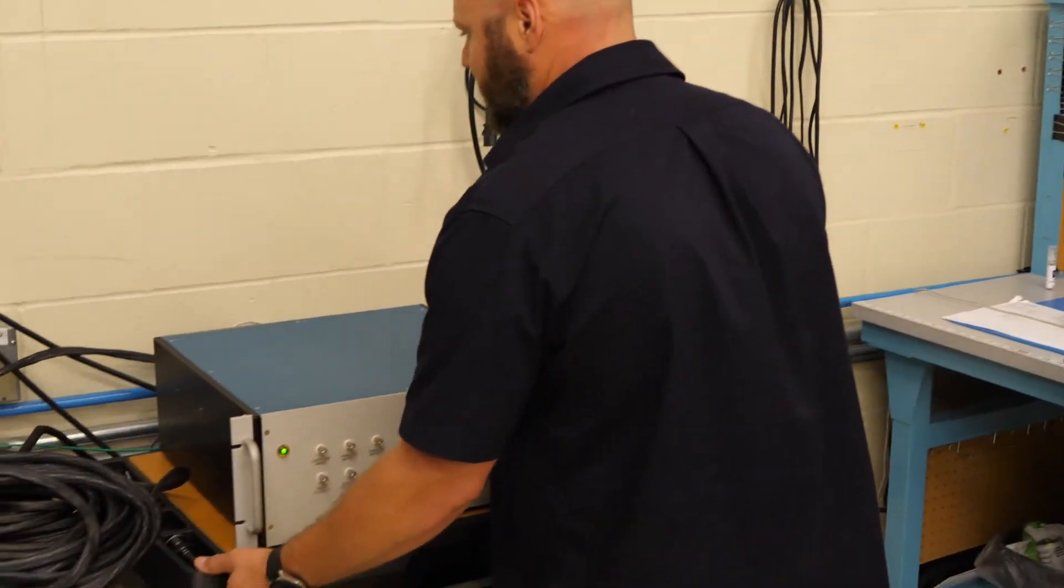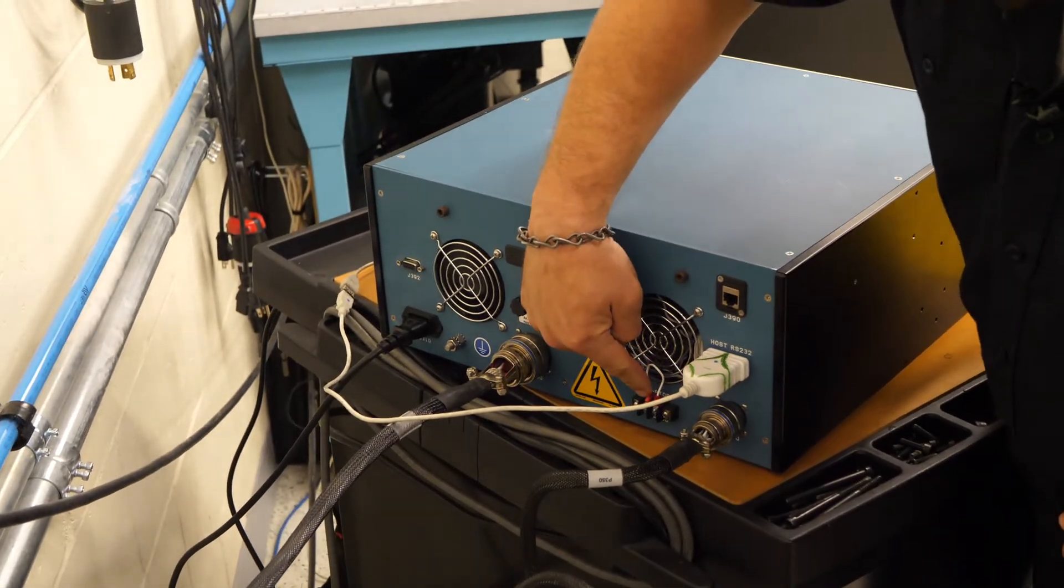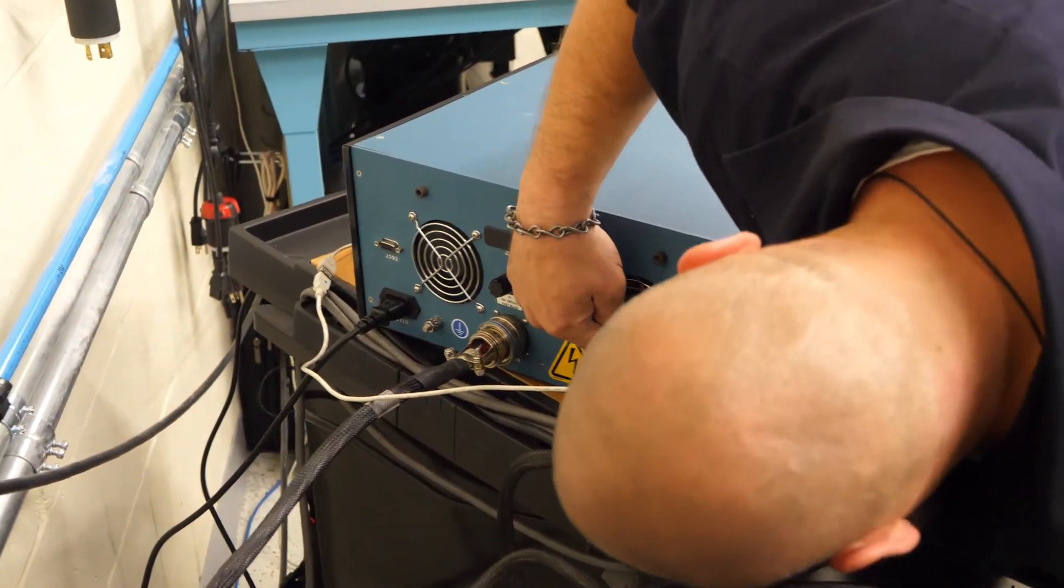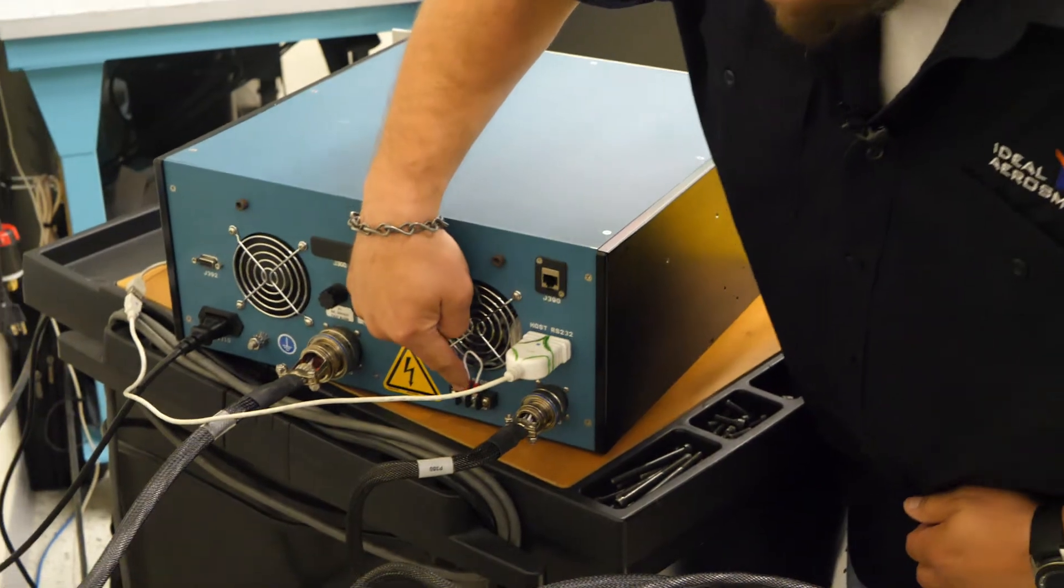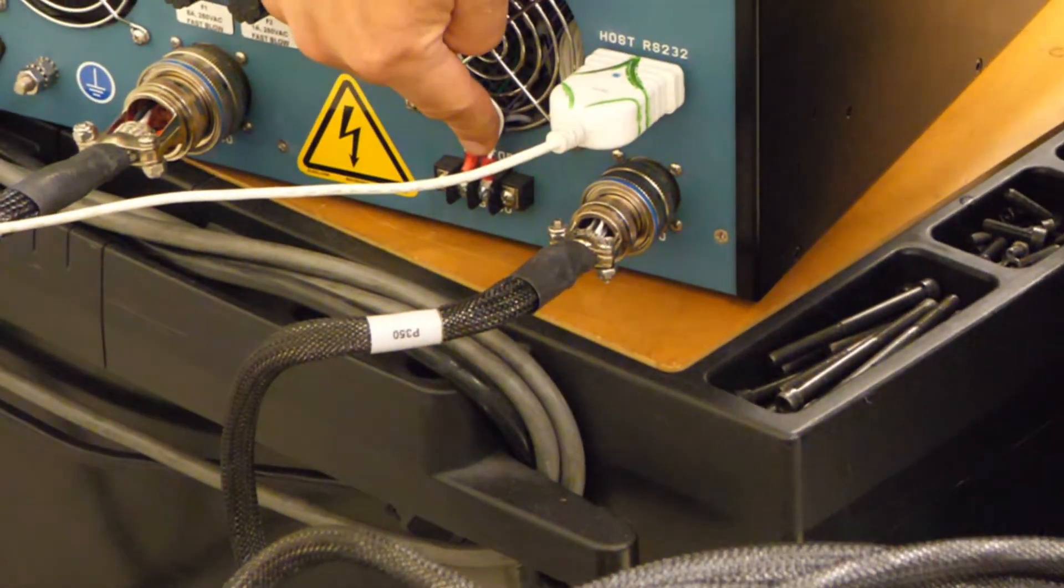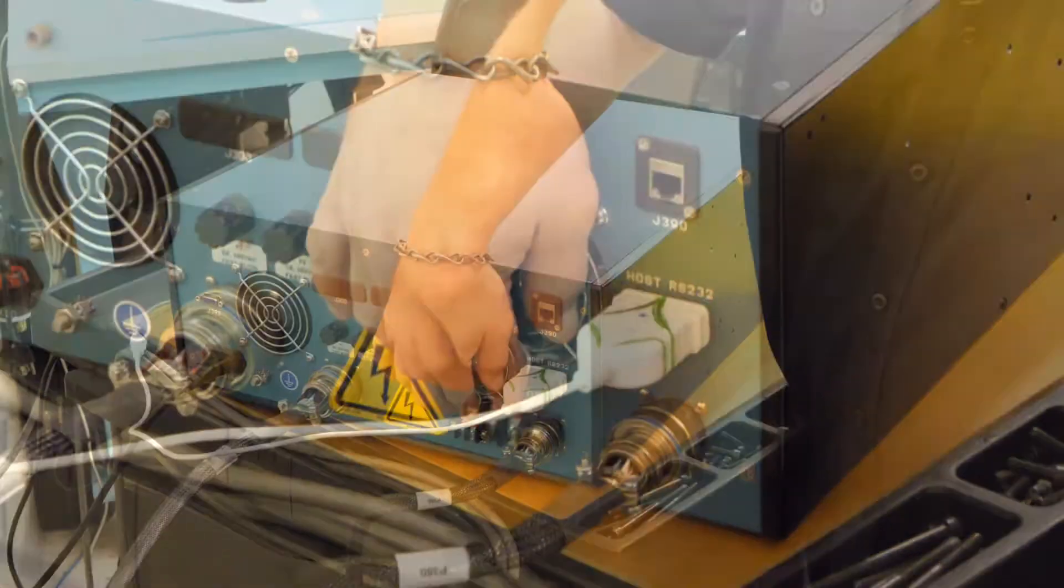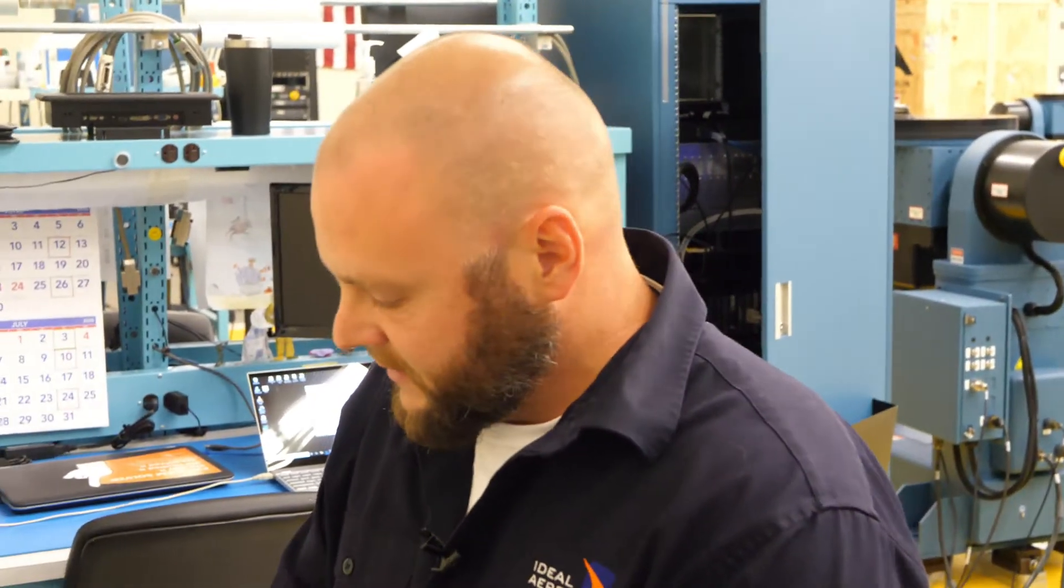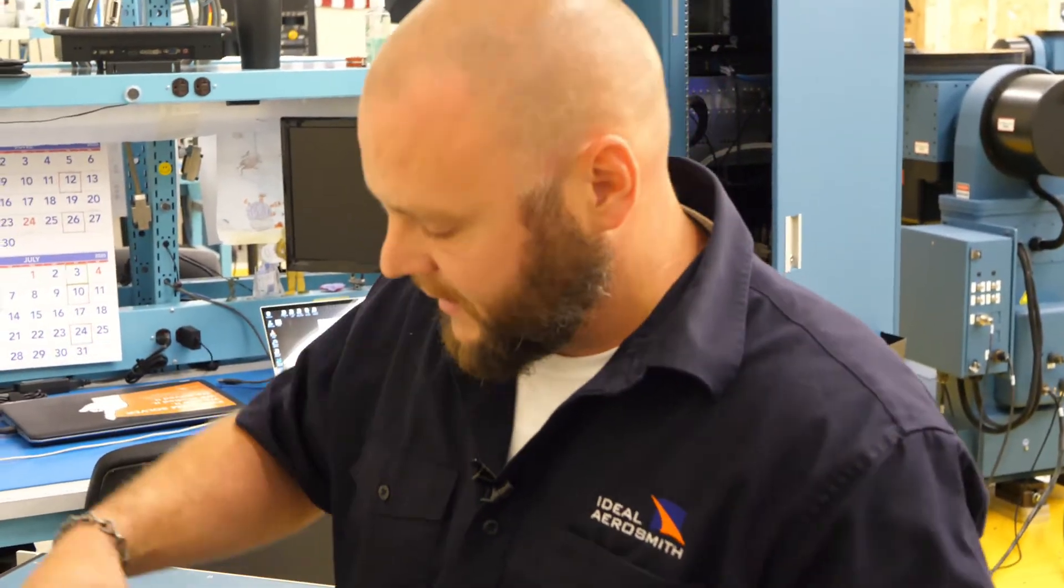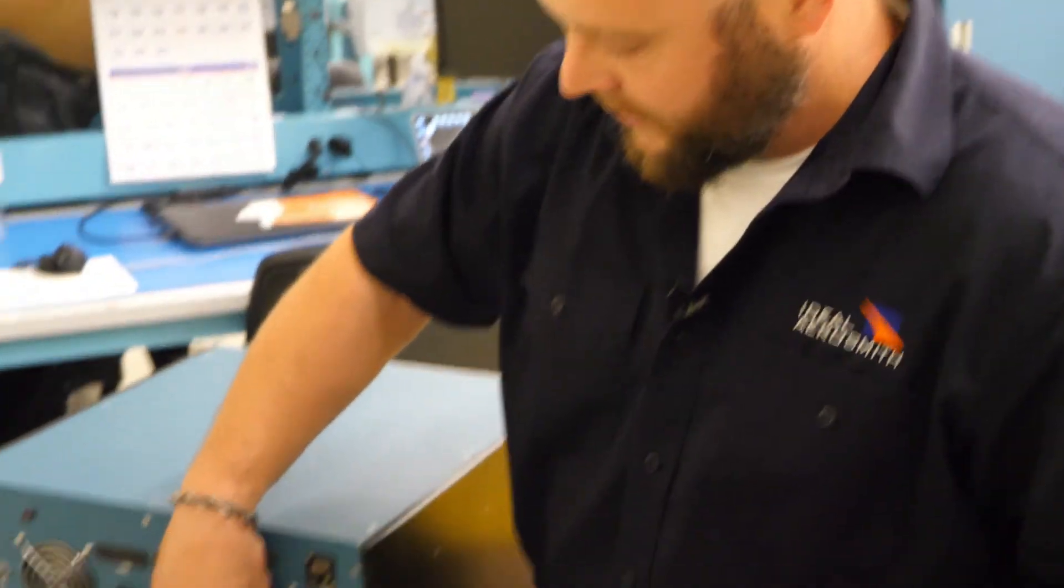On the back of the rate table, we will also want to make sure that the jumper is in place on the terminal block across the two middle, which is another part of the emergency stop loop, which you have access to if you desire to put your table in a safety enclosure or have some sort of interlock that will trip and not allow the rate table to run if someone's near it or whatever you plan on using.